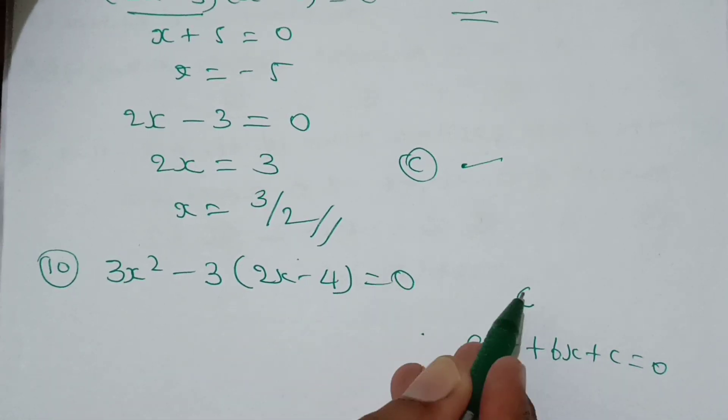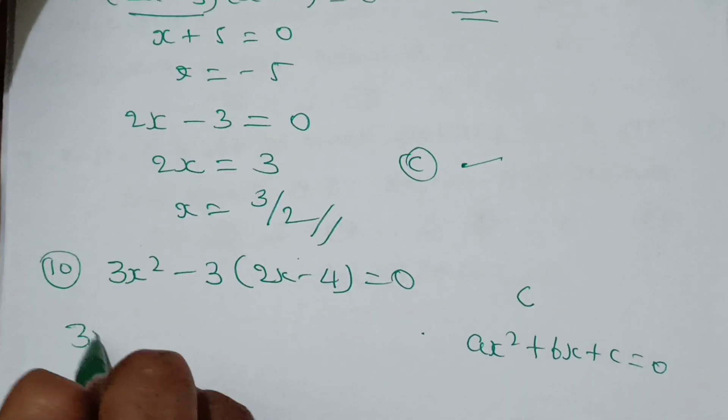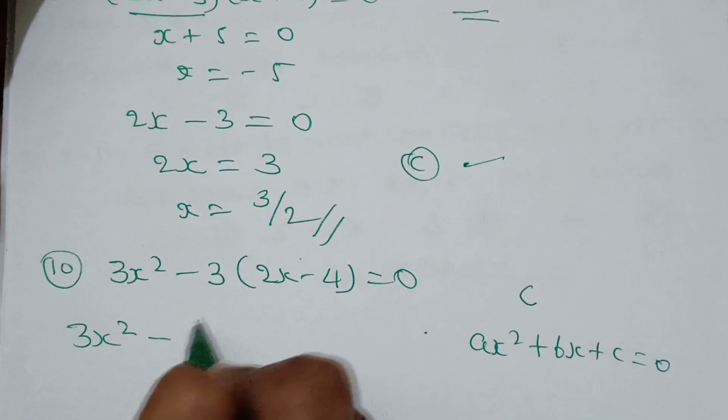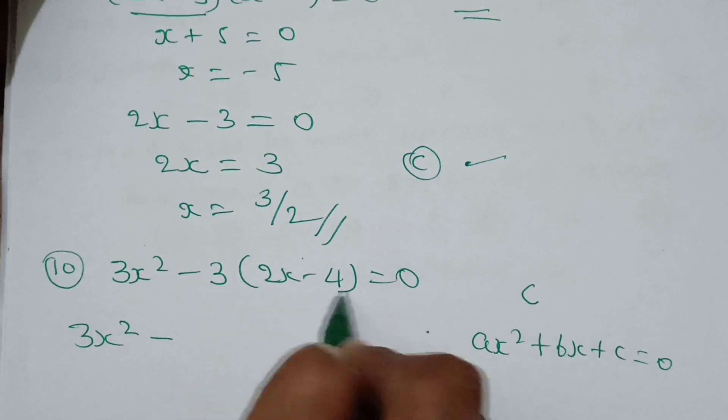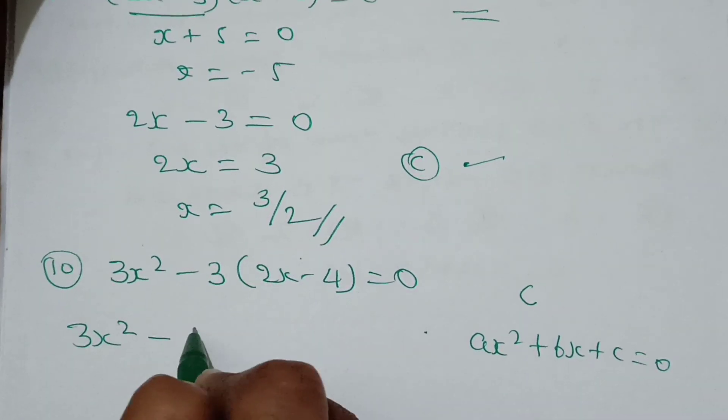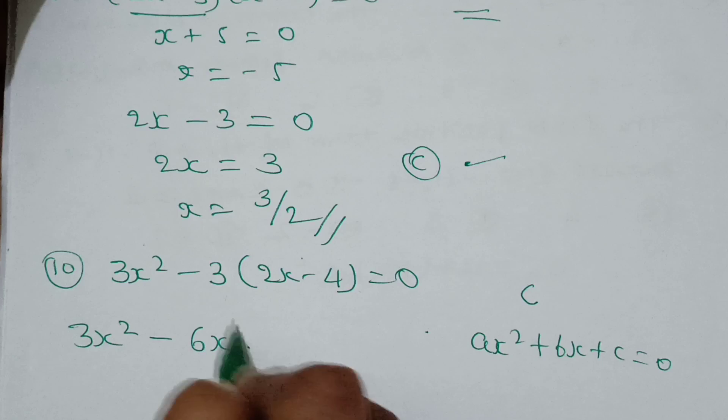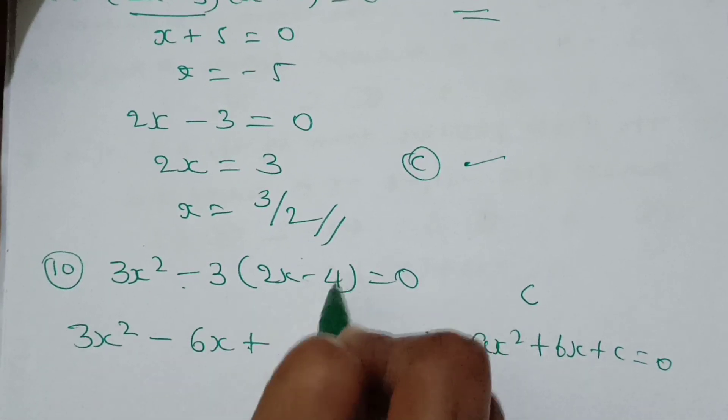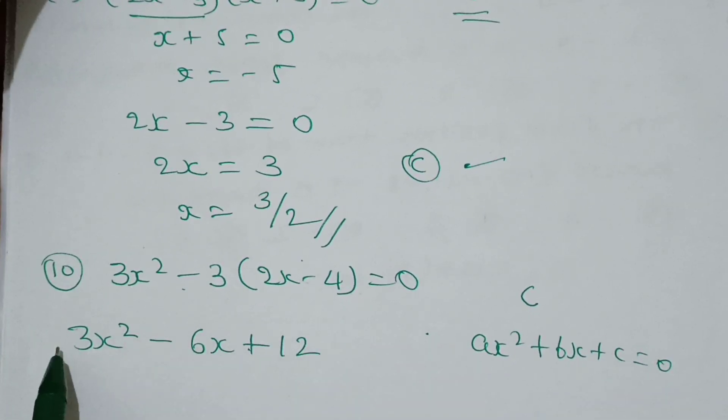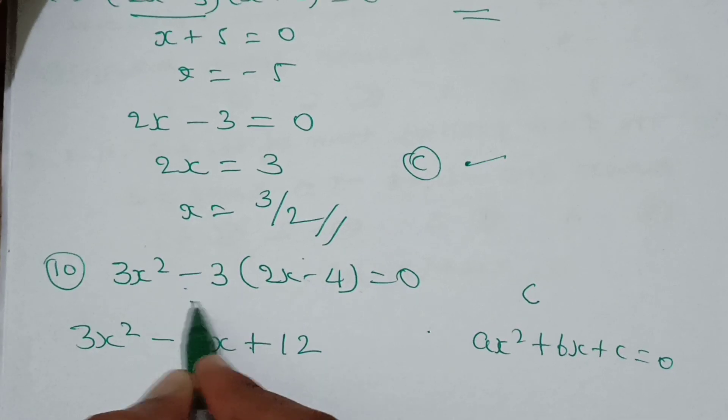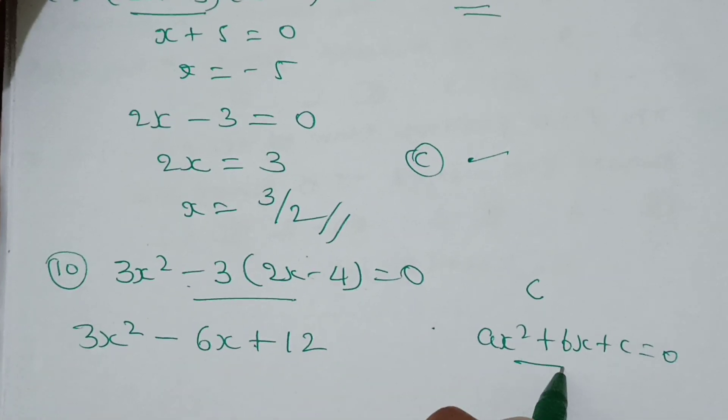So to convert to standard form, I'm multiplying this 3 by 2x and 3 by 4. So 3x squared, then 3 times 2 is 6 into x is 6x. Minus into minus is plus, so 4 times 3 is 12.